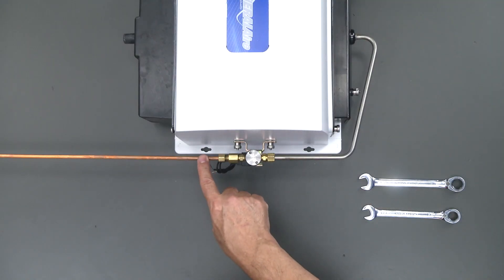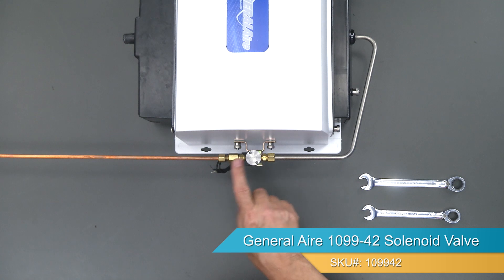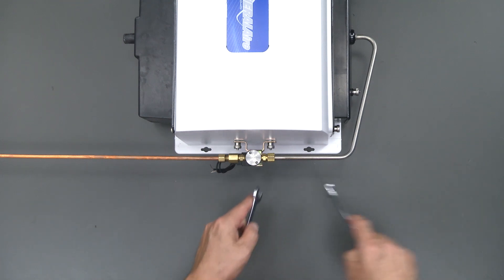We've already turned off the water and disconnected the electrical, now we're going to replace the valve. We have here a half inch and a nine-sixteenths inch wrench. We're going to use them to disconnect the lines.